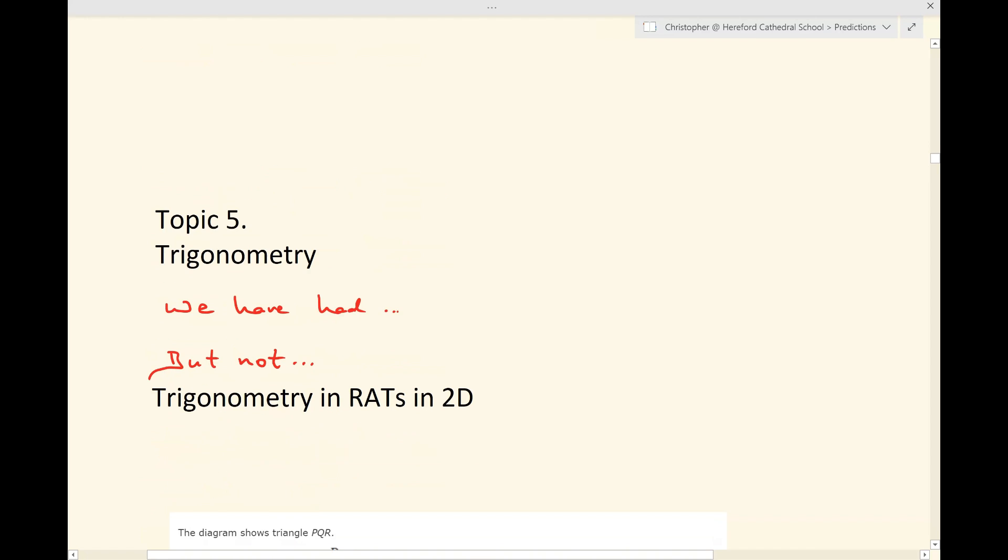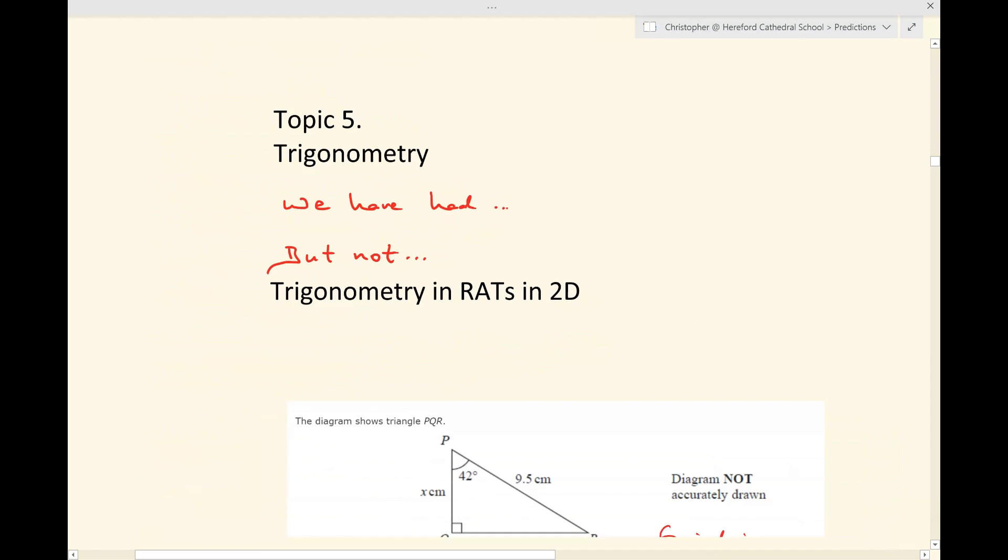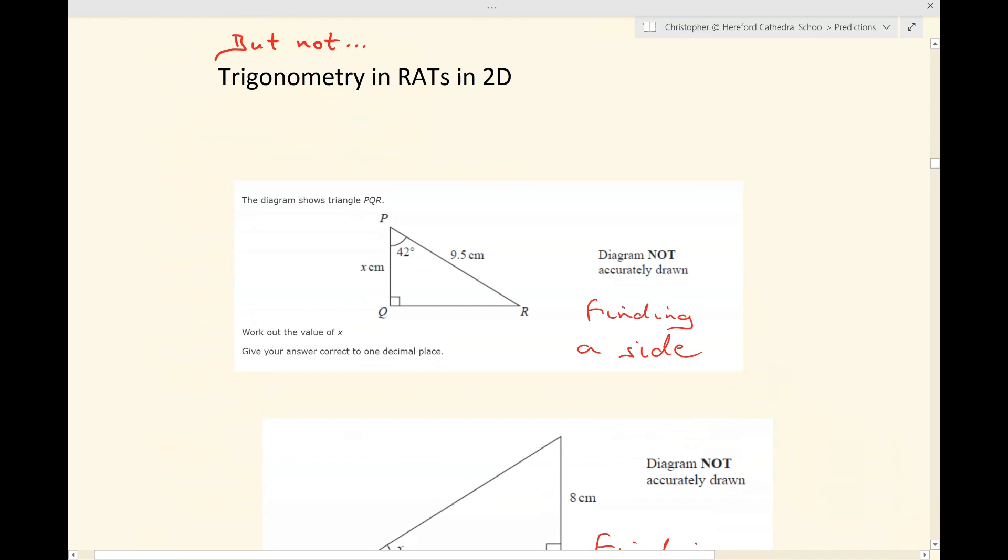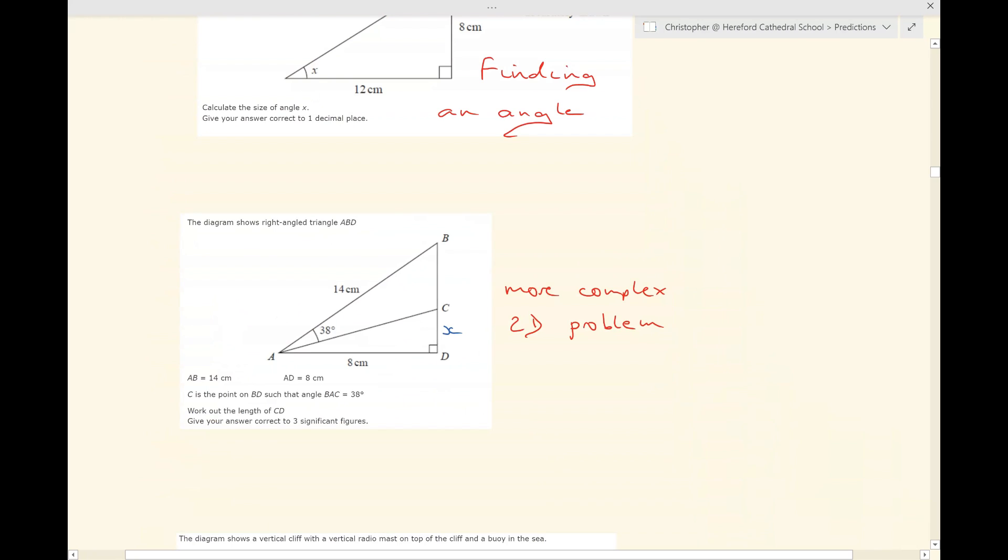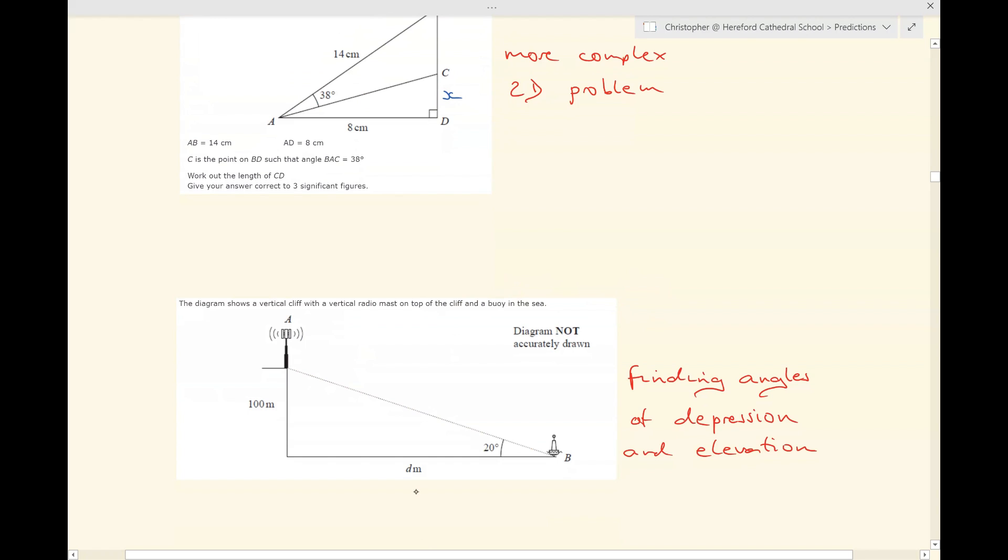Now, shape and space. Trigonometry. We've had questions using the sine rule and the cosine rule. We haven't had any questions using the area formula for a non-right-angled triangle. But more importantly, we have not had any trigonometry in right-angled triangles in two dimensions. So, you might be asked to find a side or to find an angle using SOHCAHTOA. You might find that the question given is a more complex two-dimensional problem, where you have to find something to help you find something else.